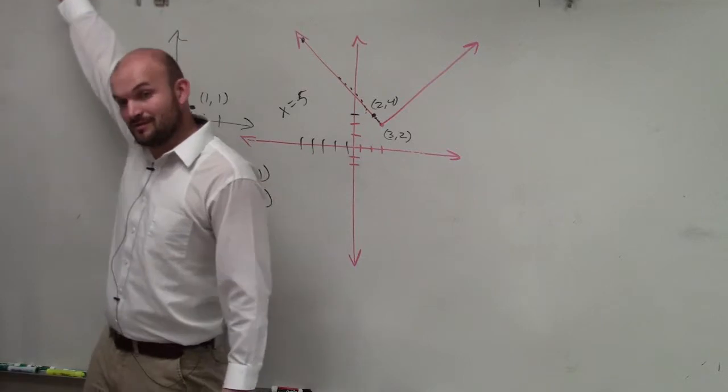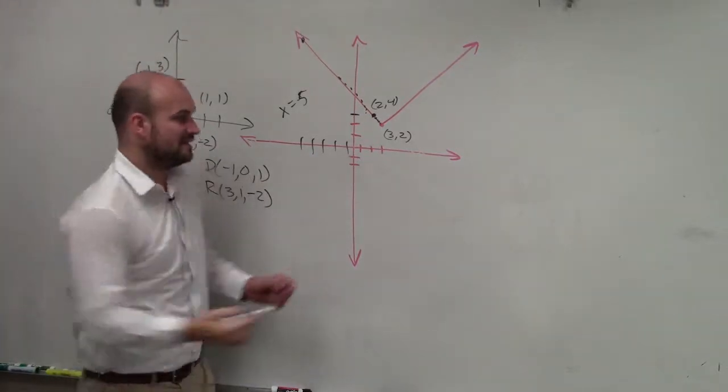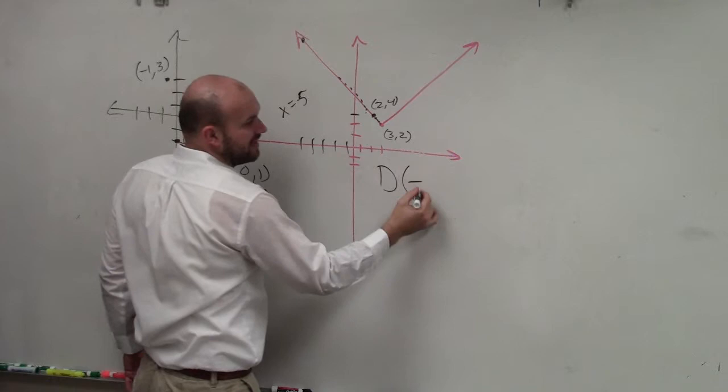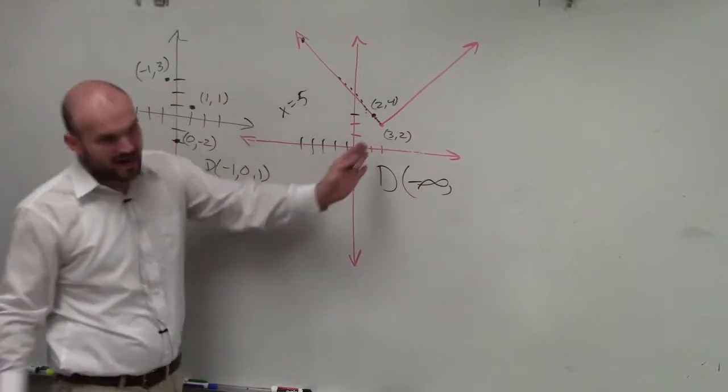No, because that graph goes on to where? Negative infinity. So the domain is all values going to negative infinity, because this graph never stops.